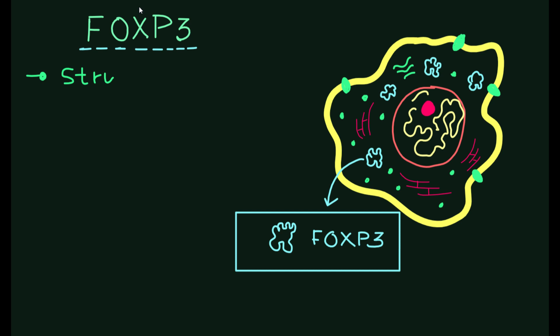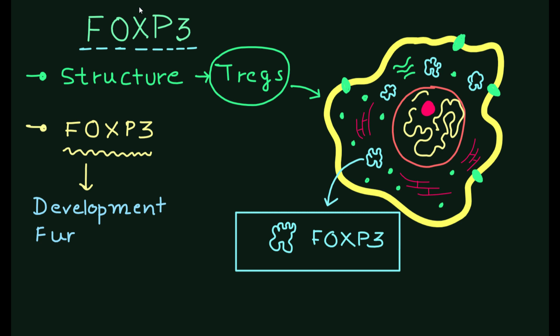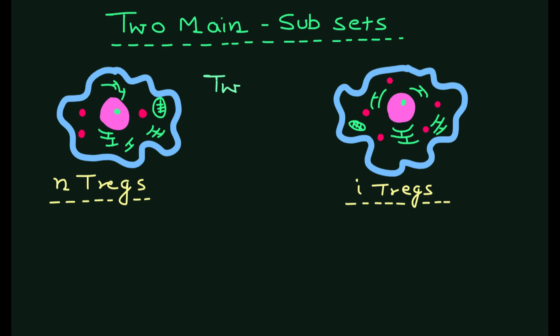First let's talk about the structure of Tregs. Tregs express a unique transcription factor called FOXP3 which is responsible for their development and function. FOXP3 is expressed at high levels in Tregs but not in other T cell subtypes.